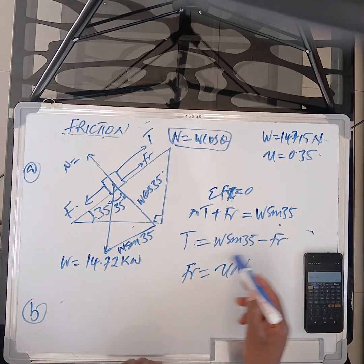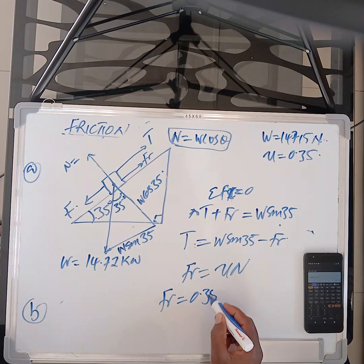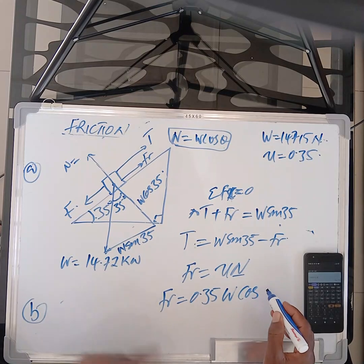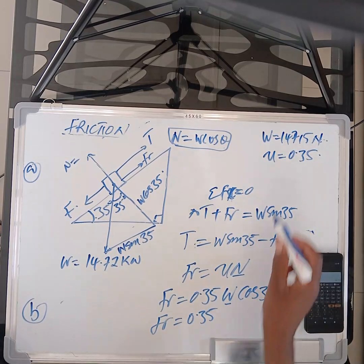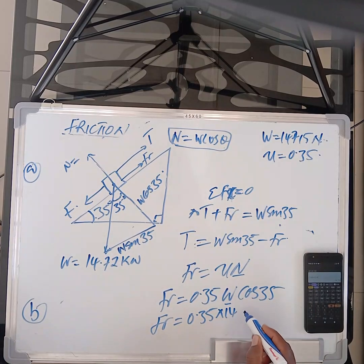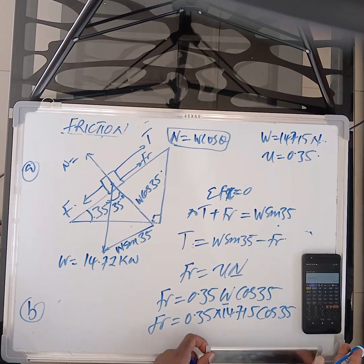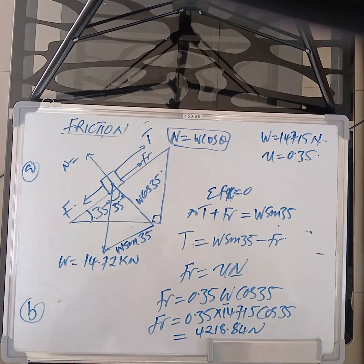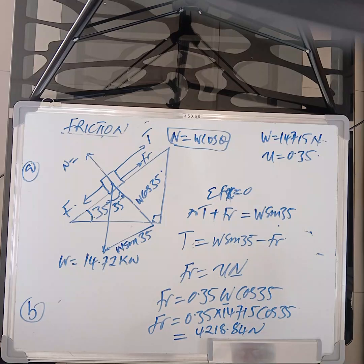So we should go and revise. So we just find friction here. So we put friction is equal to mu 0.35. Normal is W cos 35. So FR is equal to 0.35. I have my W. It's there. Times 14715 cos 35. So punch that one into the calculator and see what you are going to get. So you have solved. And mine has given me 4218.